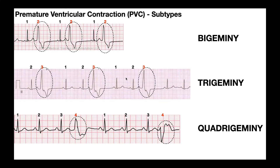The second subtype is trigeminy, because the PVC occurs every three QRS complexes. Starting at a normal one — one — another normal — two — and then the PVC occurs at number three. This repeats: normal one, normal two, abnormal PVC at three. So because it occurs every three cycles, this is trigeminy, and it's also monomorphic. The last one is quadrigeminy — the PVC occurs every four. Normal one, normal two, normal three, and PVC at four. This particular example is polymorphic because one PVC goes up and another goes down, making it polymorphic quadrigeminy.